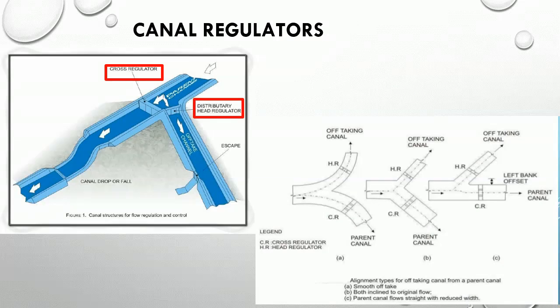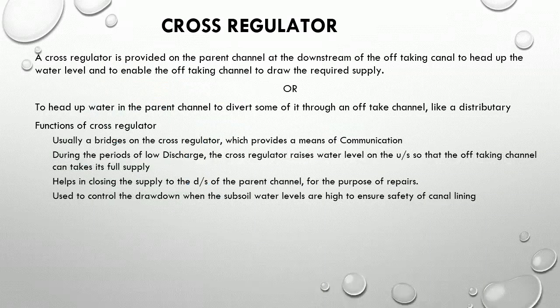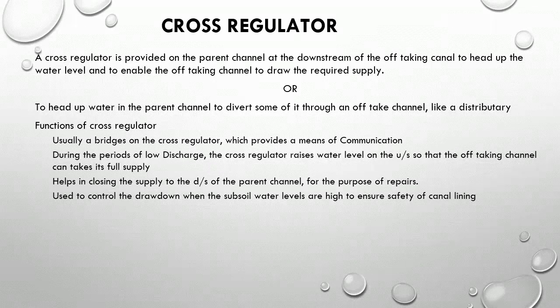Next we are going to discuss about canal regulators — the cross regulator and distributory head regulator. A cross regulator is provided on the parent channel at the downstream of the off-taking canal, to head up the water level and to enable the off-taking channel to draw the required supply, or to head up water in the parent channel to divert some of it through an off-take channel like a distributory.